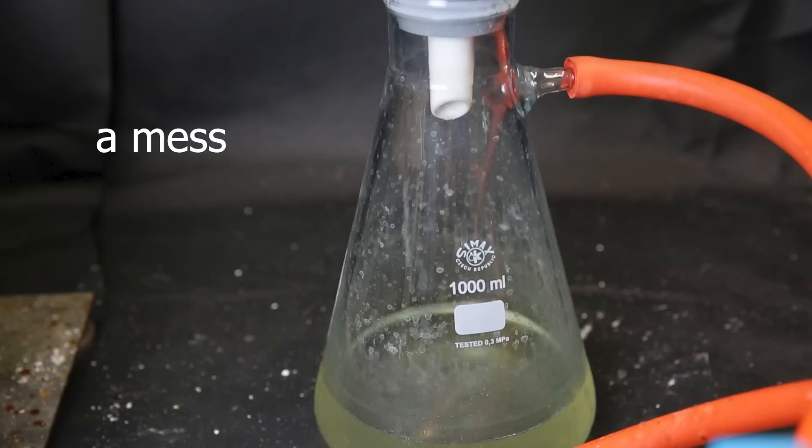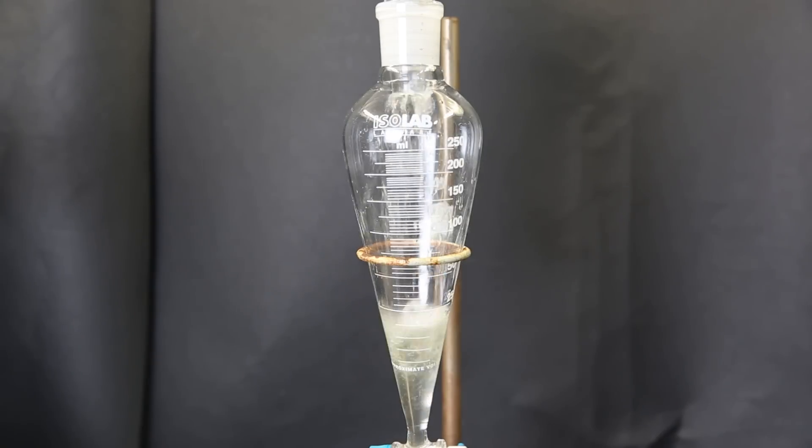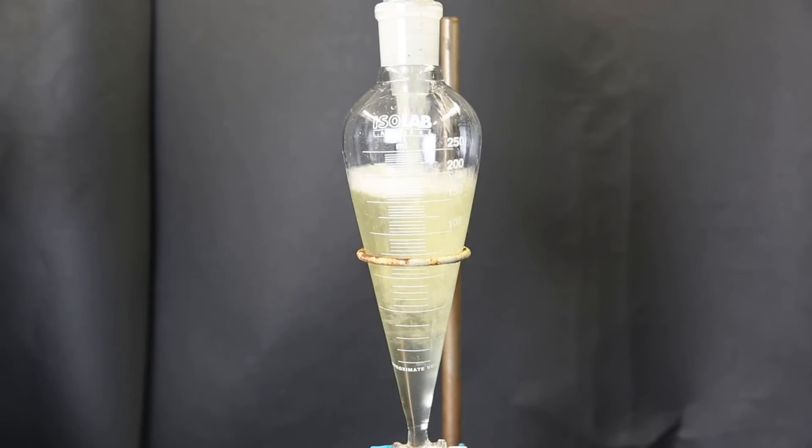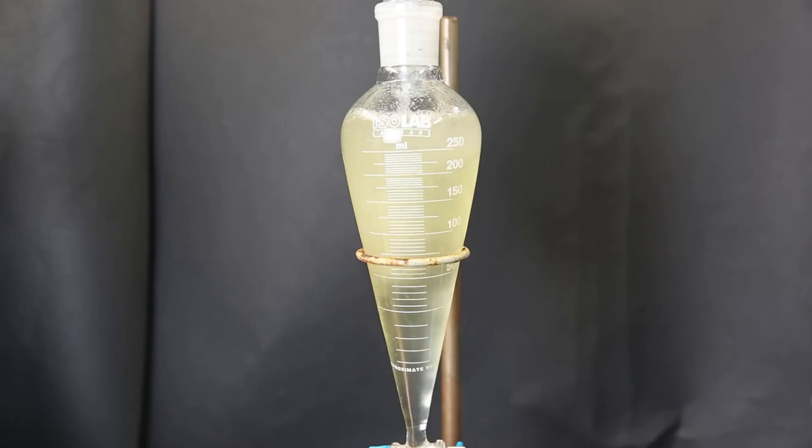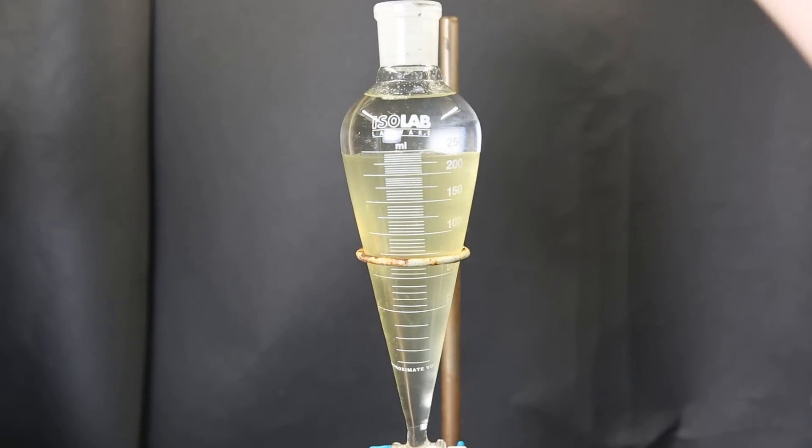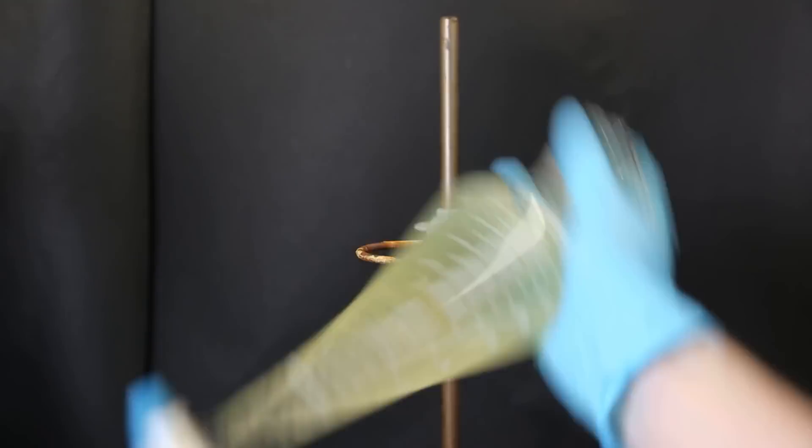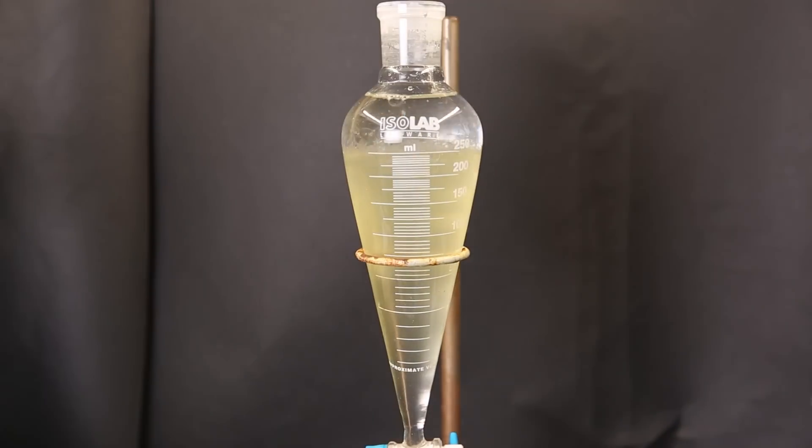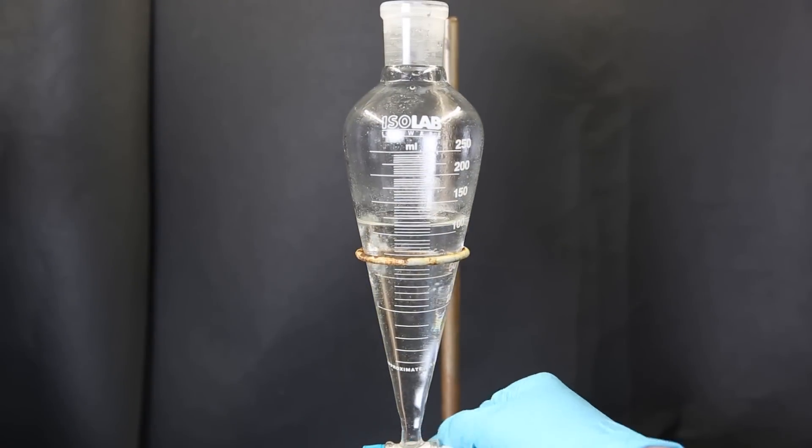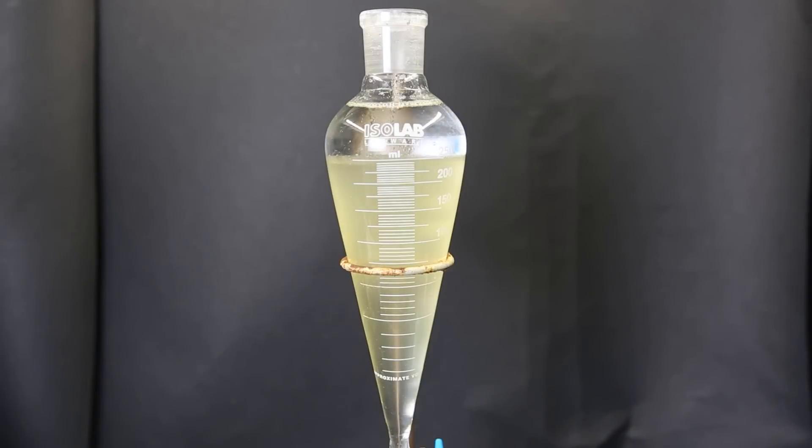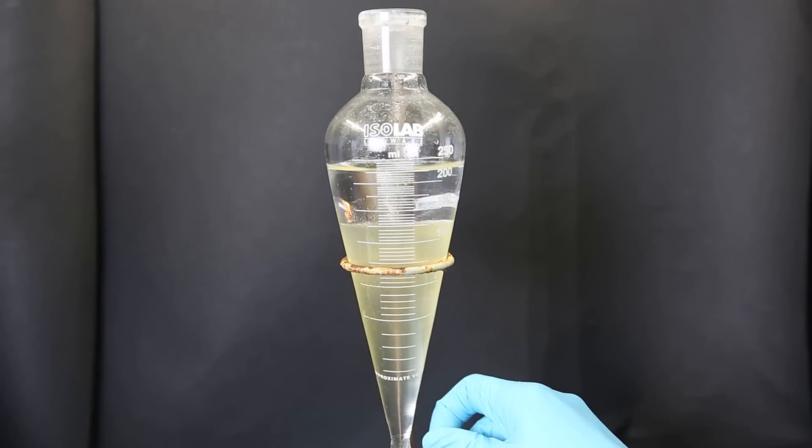Now I wash the filtrate multiple times with a saturated sodium bicarbonate solution. I shake the funnel and vent regularly, but there is no pressure buildup. After washing it several times with sodium bicarbonate, I take the organic layer again and wash it once with some brine. Then I collect the organic layer and put it into a beaker.